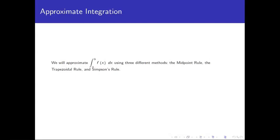In this video we're going to talk about approximate integration. Sometimes you'll run across integrals that you will not be able to compute by hand. A common example is e to the negative x squared over some interval. That function has applications to the normal distribution in statistics and is exceptionally important to integrate, except we can't possibly do it by hand. So we need ways to approximate definite integrals without finding their exact values.